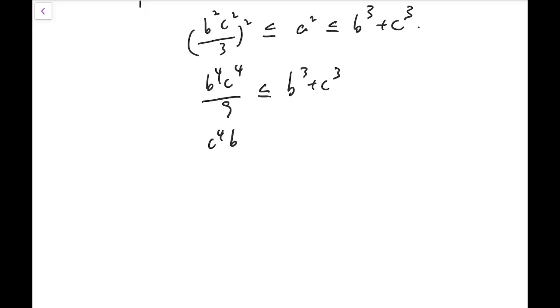And now I even divide b cubed to the right-hand side, and I'll have c to the 4, b over 9, less than or equal to 1 plus c over b whole cubed. And the right side can't even exceed 2. So c to the 4 times b is less than or equal to 18. And so basically, at this point, c can only be 1 or 2.